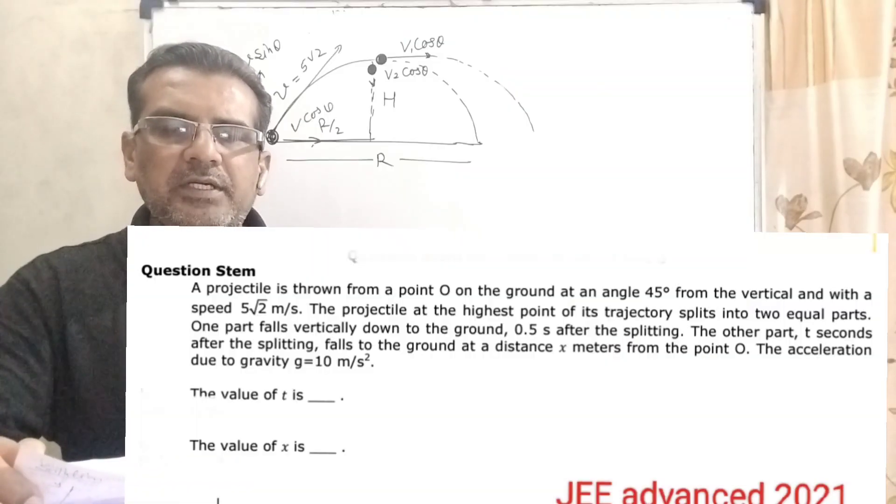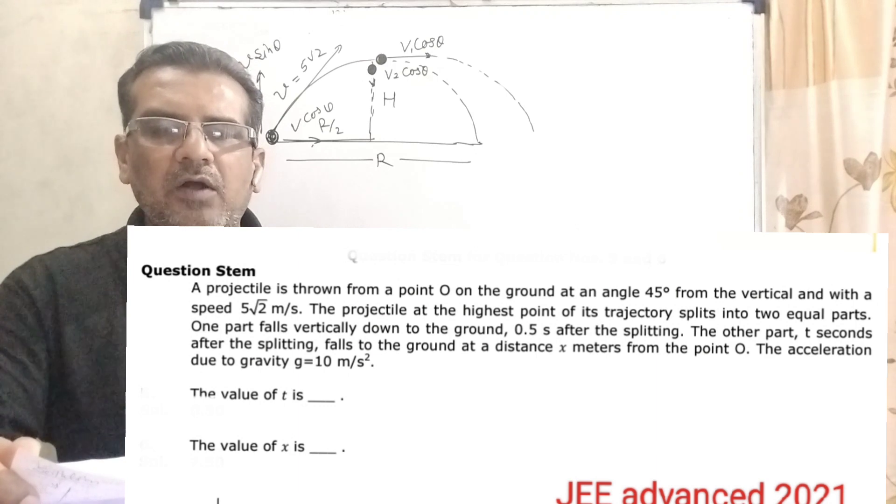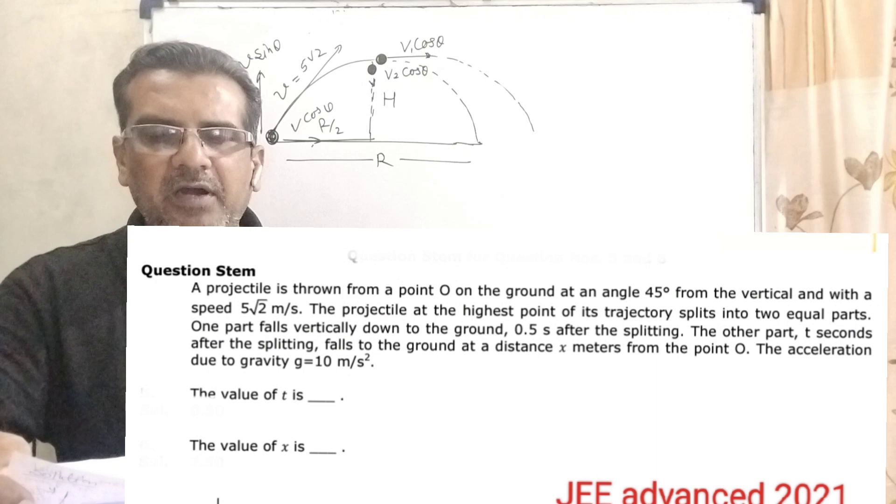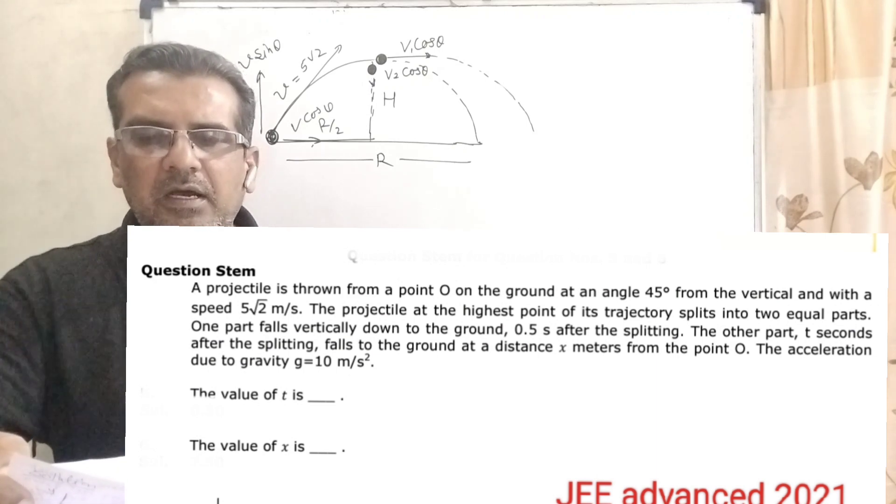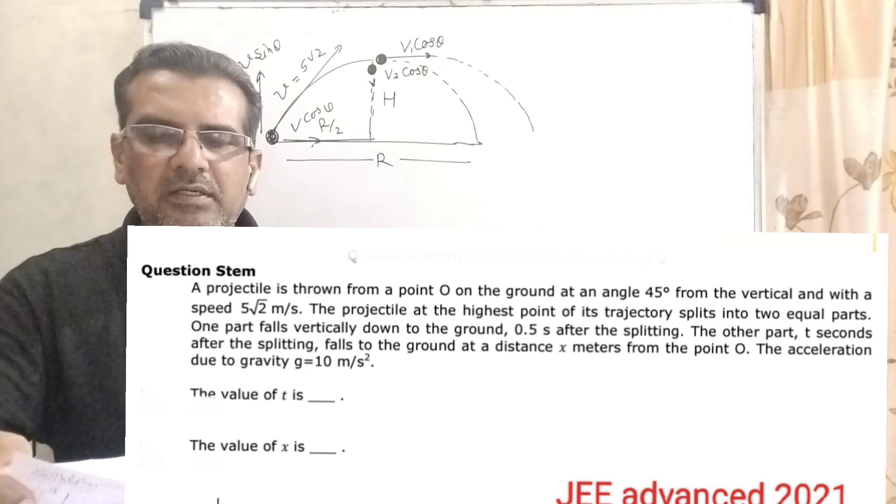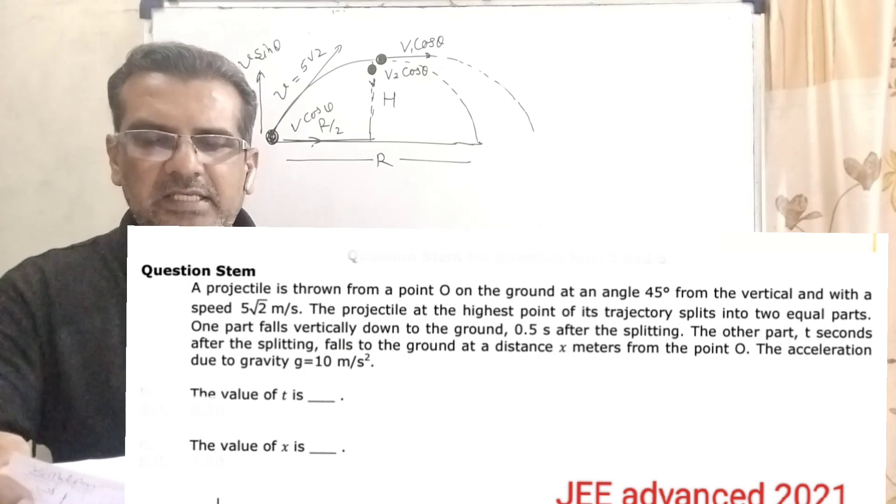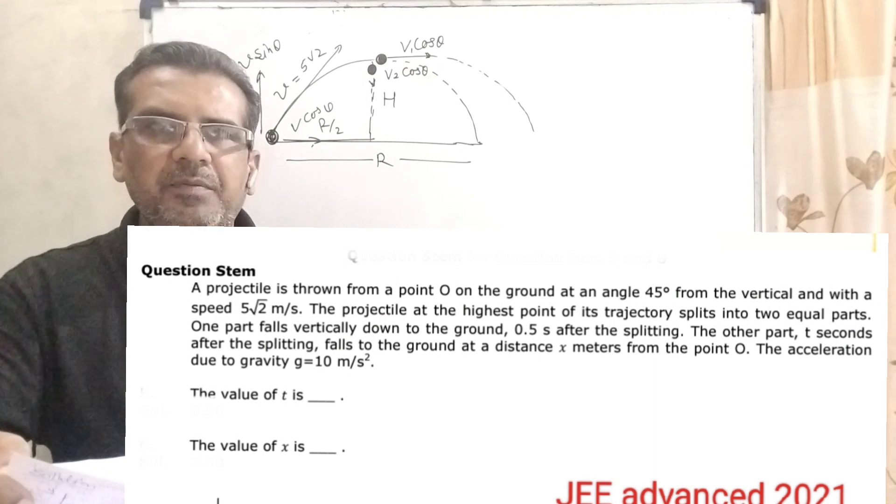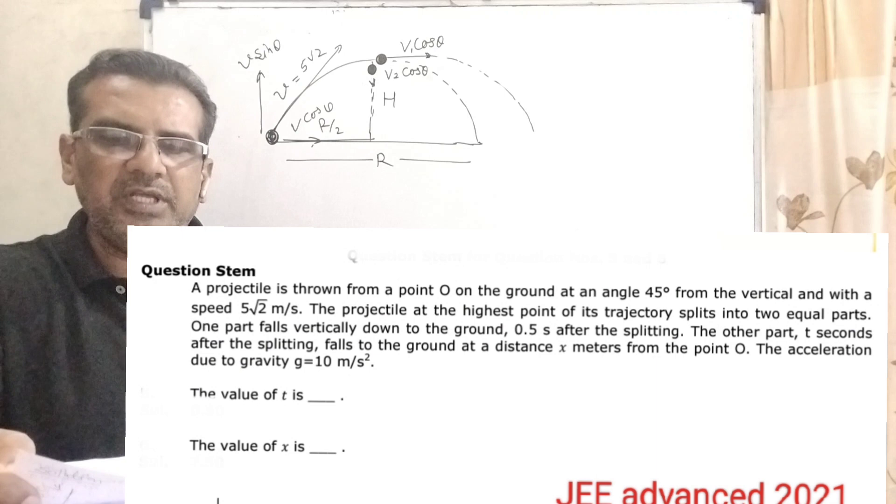Question is here. A projectile is thrown from a point O on the ground at an angle 45 degrees from the vertical with a speed 5√2 m/s. The projectile at the highest point of its trajectory splits into two equal parts. One part falls vertically down to the ground 0.5 seconds after the splitting. The other part, t seconds after, falls to the ground at a distance x meters from point O. The acceleration due to gravity g = 10 m/s².